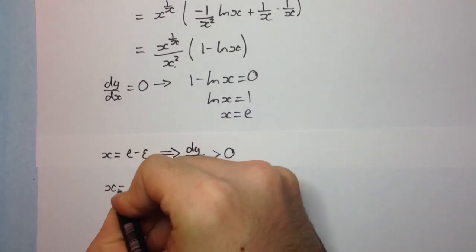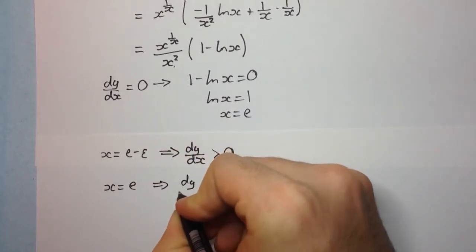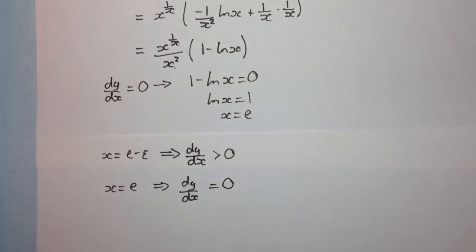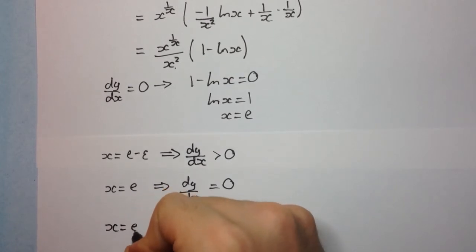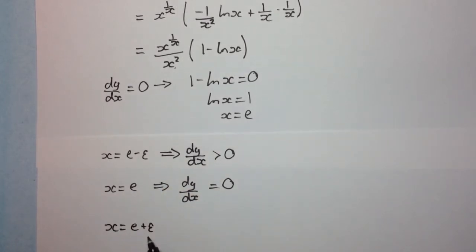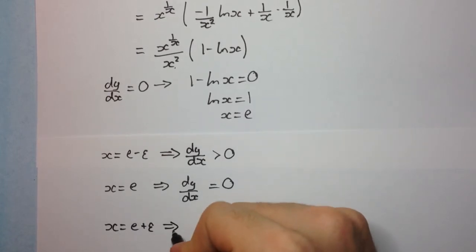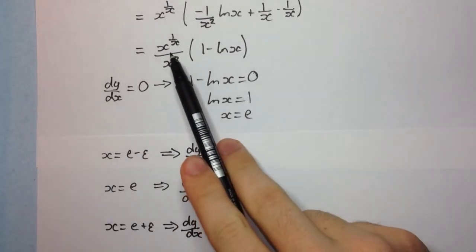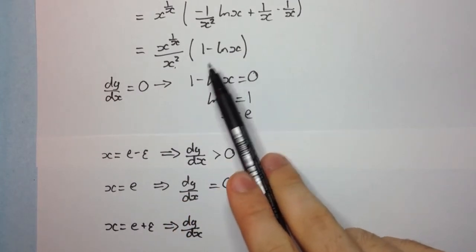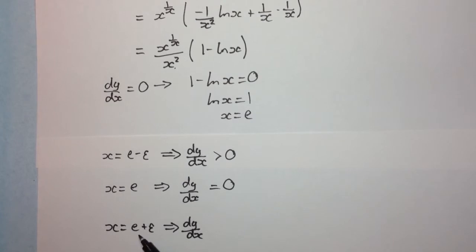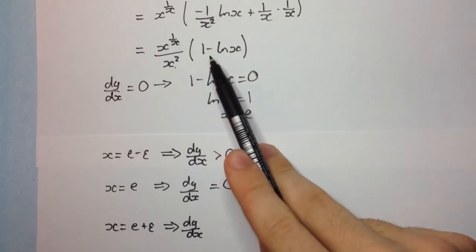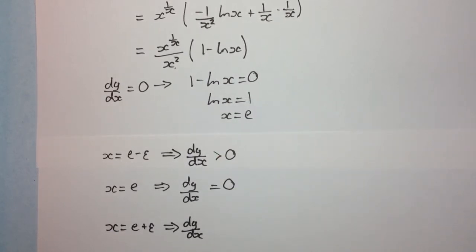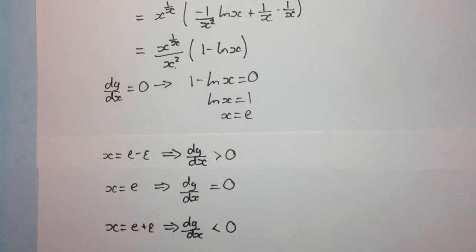At x equals e, we already know that dy/dx equals 0. Now what about a little bit above e — x equals e plus epsilon? Once again, this bit is always positive, so we're only checking the bracket. When we substitute in a little bit greater than e, the log of something greater than e is greater than 1. So we have 1 minus something greater than 1, which is negative. So we have a positive times a negative, and therefore we have a negative derivative.